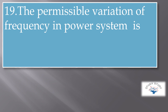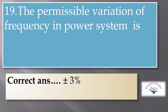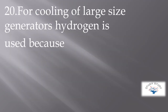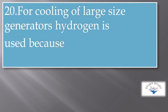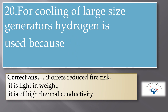The unit of voltage is volt. For cooling of large size generators, hydrogen is used because it is light in weight and has high thermal conductivity.